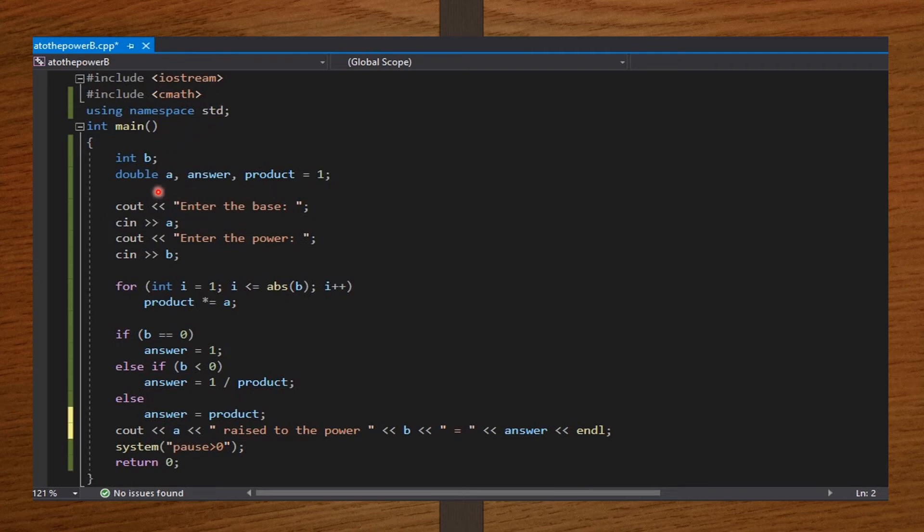Remember, I'm taking a as a double because the question said a, or which is the base, may also be a real number. But then, b should always be an integer.